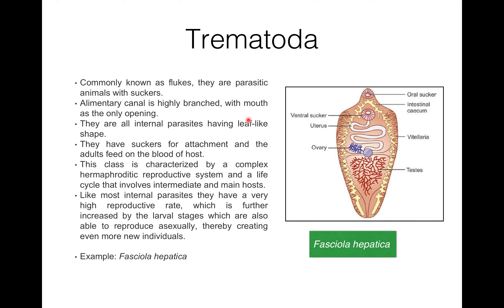Now, Trematoda — 'trema' means hole and 'eidos' means form. They are commonly known as flukes. They are parasitic with suckers, and can be ectoparasitic or endoparasitic flatworms.